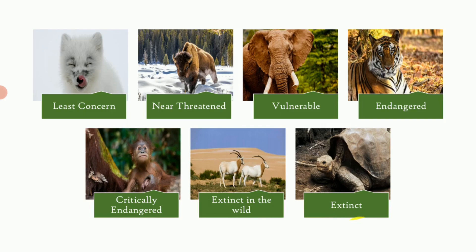The last category is 'extinct' — species no longer present on the surface of the earth. Shown here is the Pinta Island tortoise; the last individual, known as Lonesome George, died in 2012. Other examples include the passenger pigeon, which was endemic to North America and last died in captivity in 1917, and the well-known Dodo, which was endemic to Mauritius and went completely extinct due to habitat loss and being hunted for its meat.